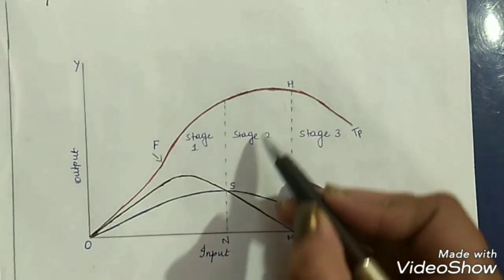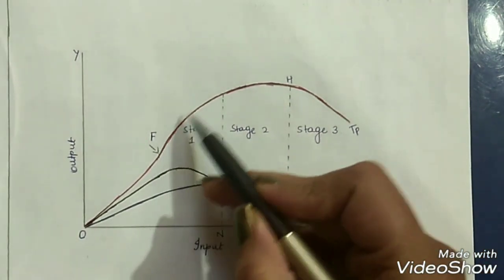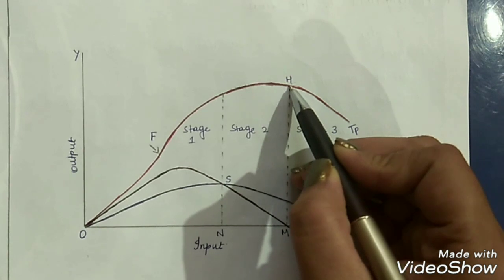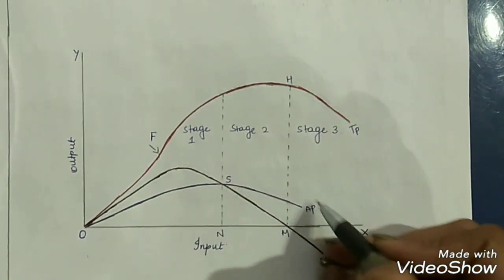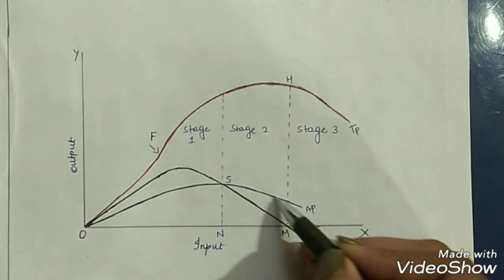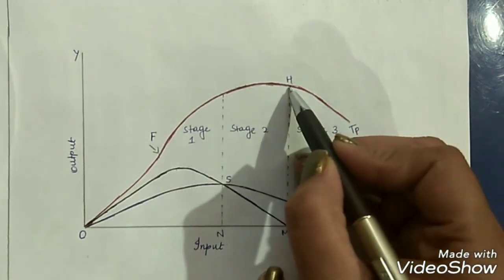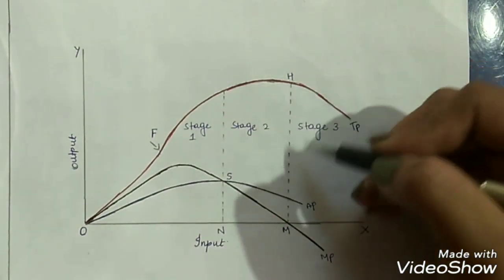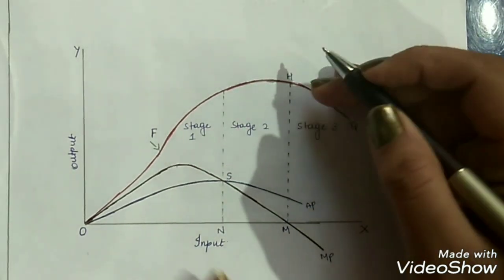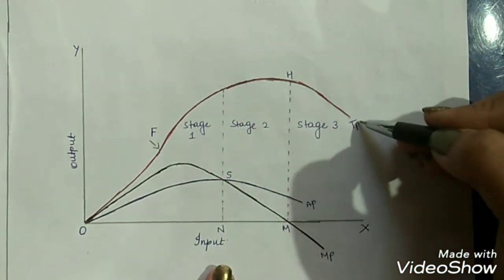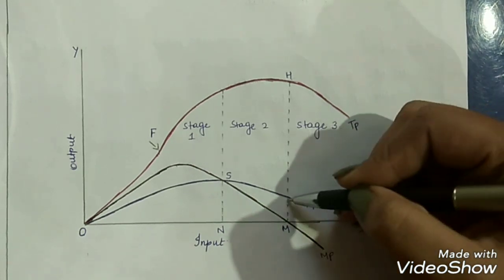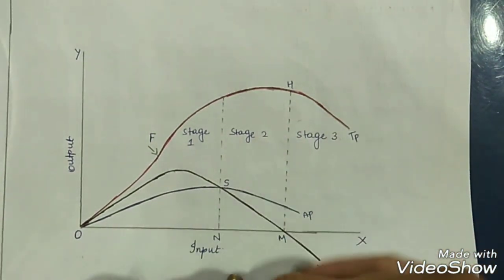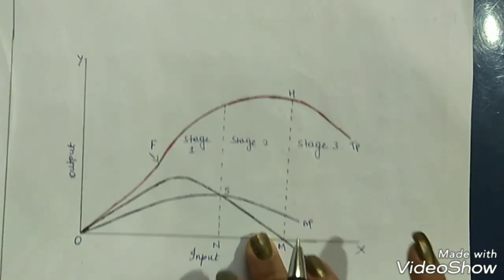From N to M is stage 2. Total product continues to increase at a diminishing rate until it reaches its highest point H. Both MP and AP are falling in this stage. Stage 2 ends when total product reaches point H. In the third stage, total product starts to decline, marginal product goes negative, and average product also declines. This was all about the statement, assumptions, schedule, and graph of the law of variable proportions.